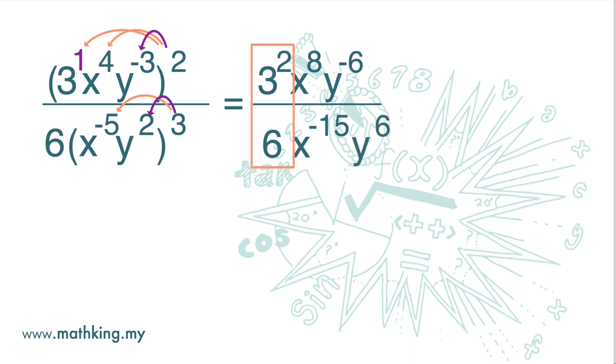3 squared over 6, we get 3 over 2. Now fraction means division, so we are going to find the difference between the indices.